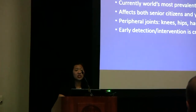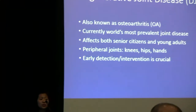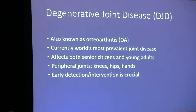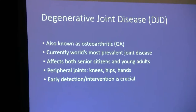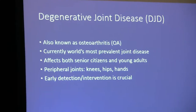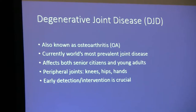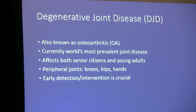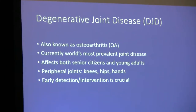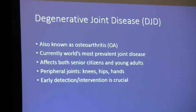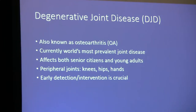A little bit about degenerative joint disease: it is currently the world's most prevalent joint disease, affecting more than 27 million in just America. It is characterized by the loss of articular cartilage, subchondral bone formation, and osteophyte formation, and it normally affects senior citizens.